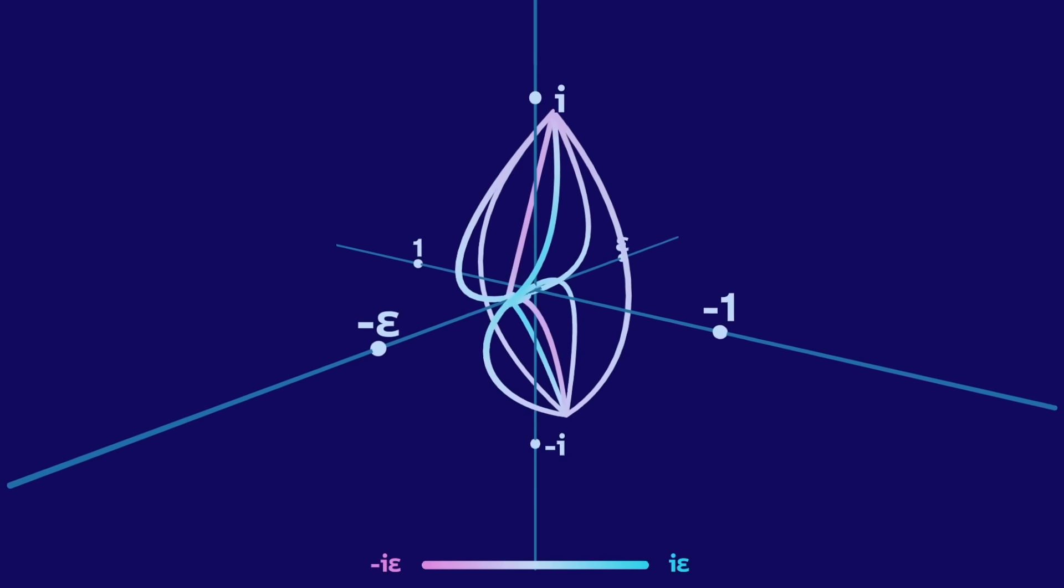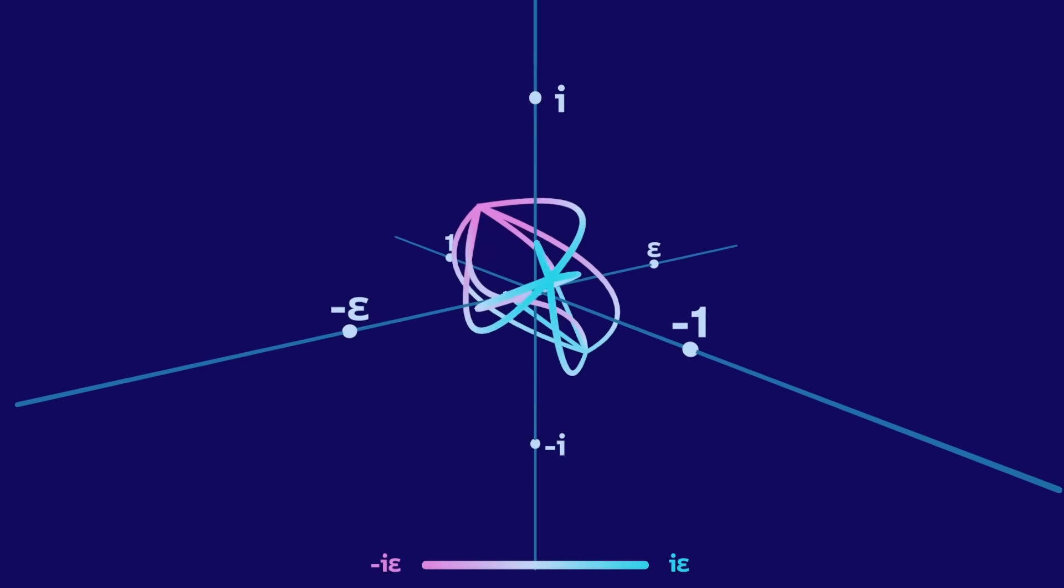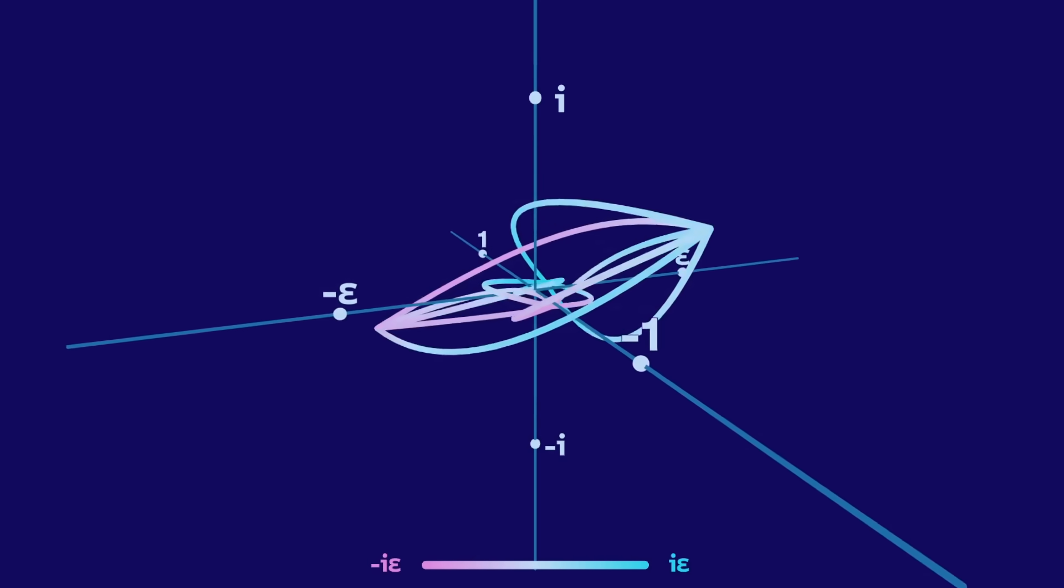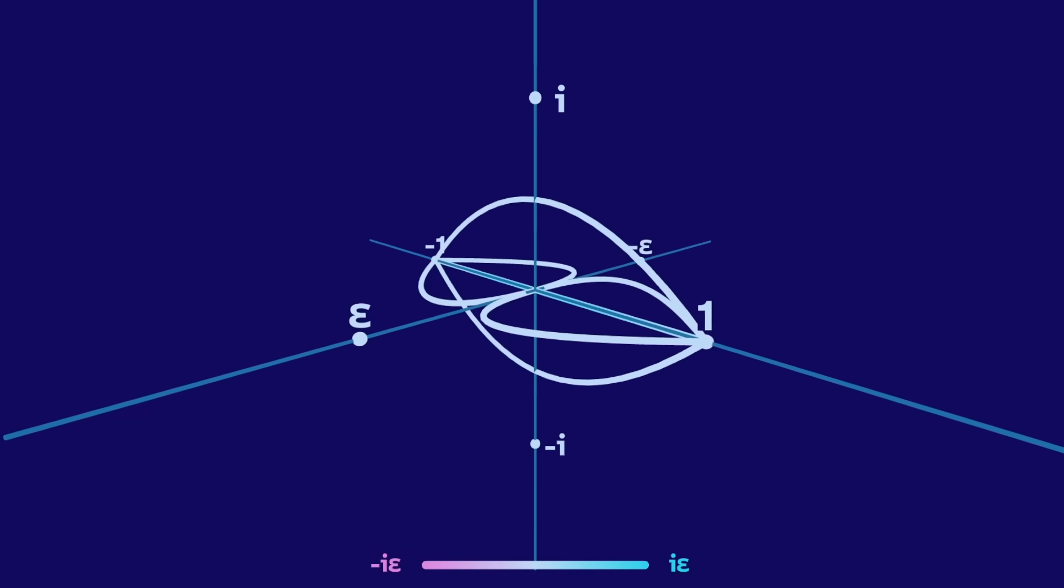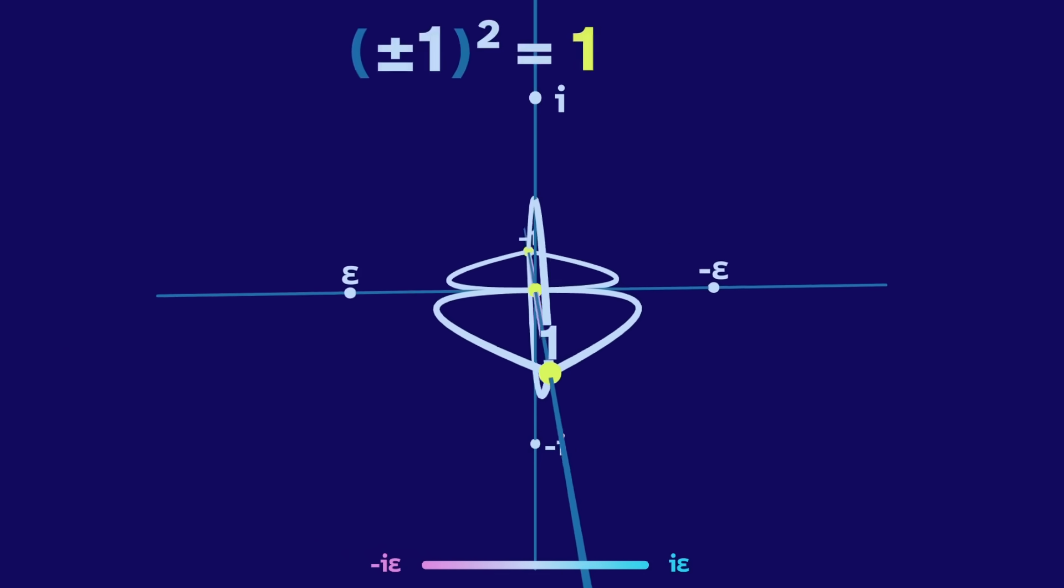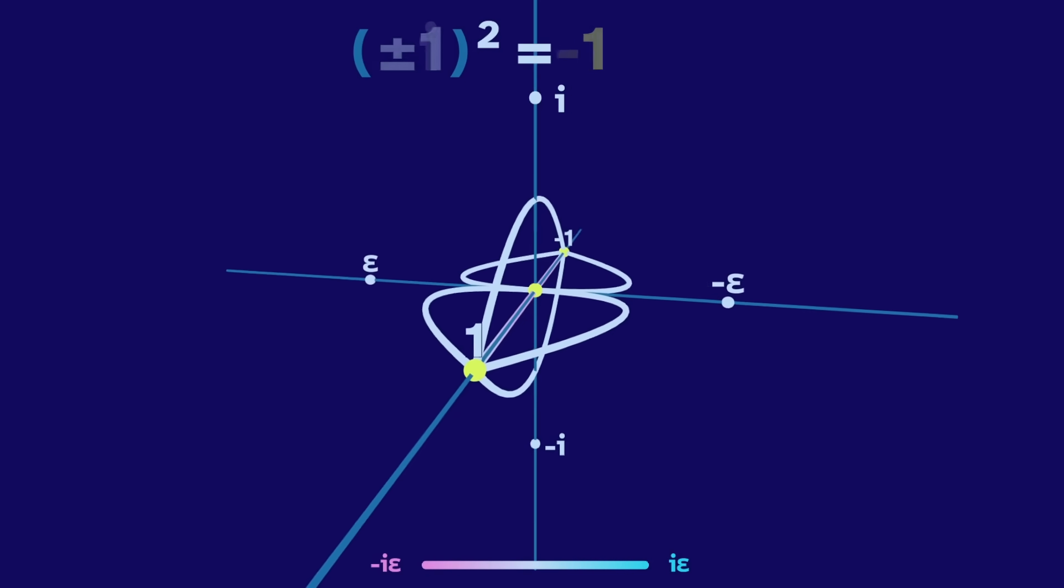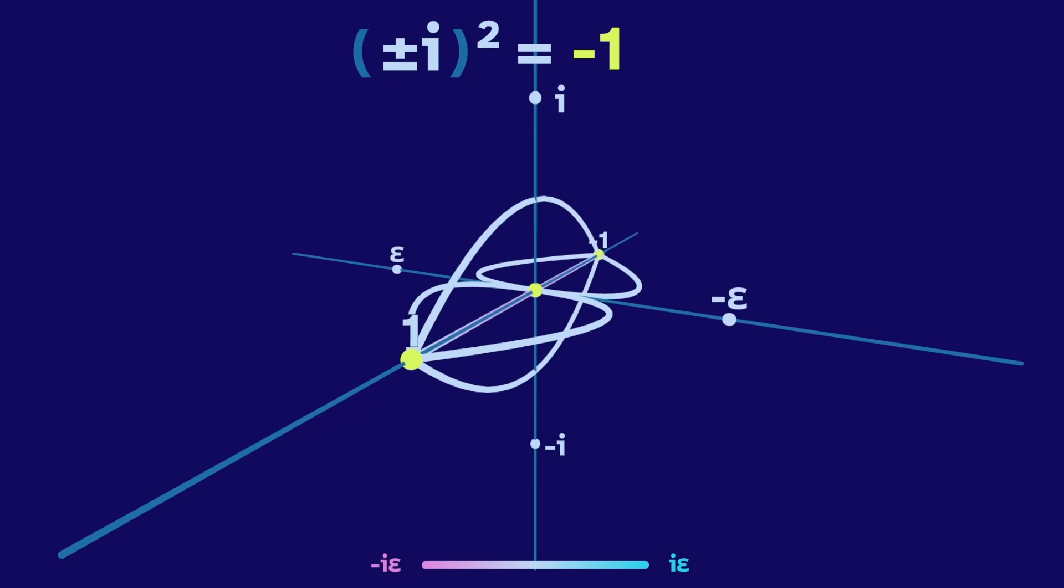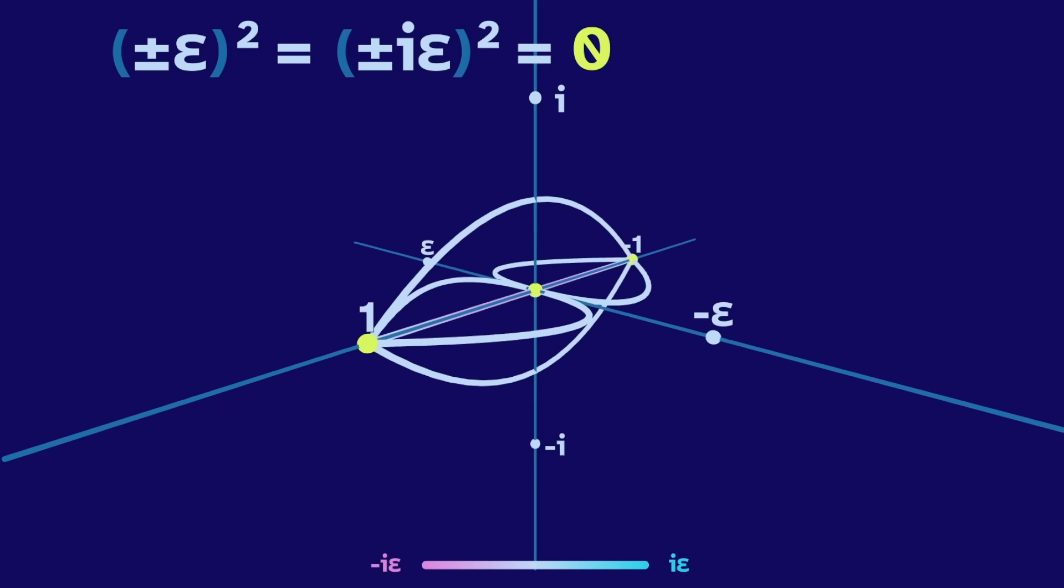So let's square all the points. Now it's curvy, but it's hard to see what's going on. So let's bring it back to the original position. Now the curves just go between 1, 0, and negative 1. This is because the real vertices square to 1, the imaginaries square to negative 1, and the duals and imagiduals square to 0.